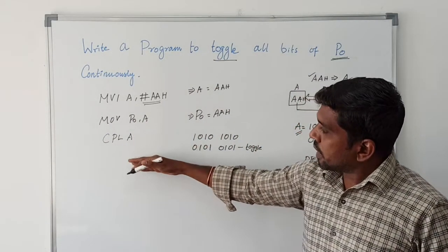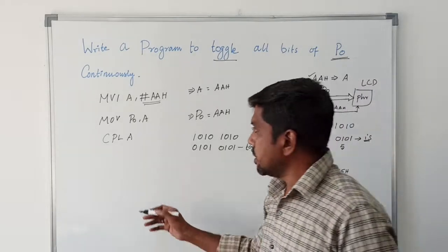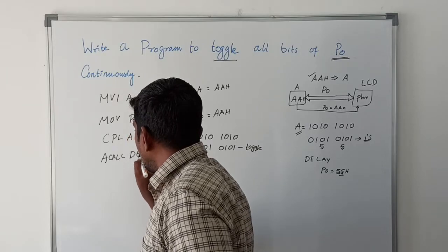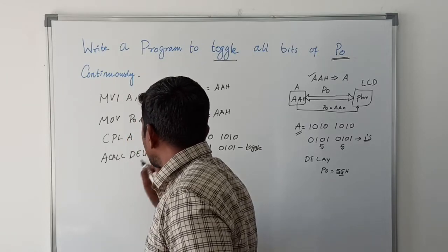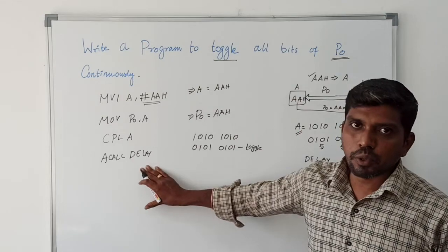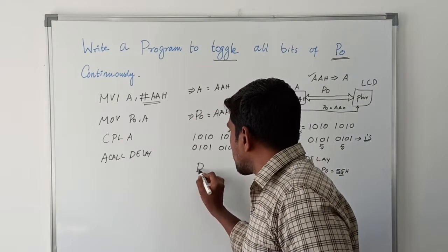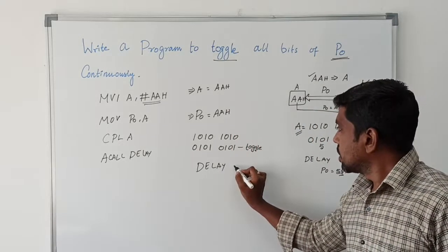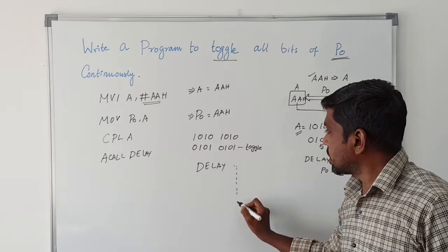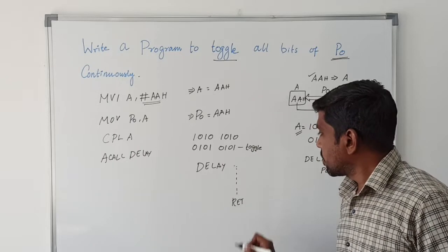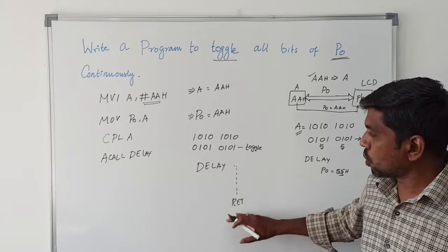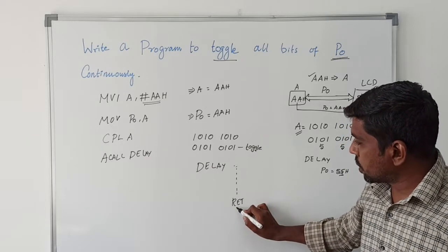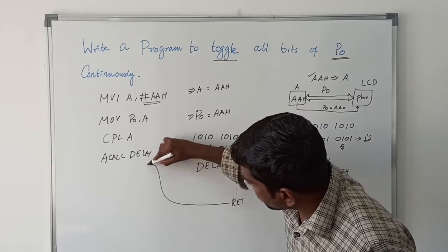Then I introduce some delay using the instruction ACALL delay. It is a type of subroutine call. The program counter is moved to the subprogram. I am using some instructions related to delay. Finally, I am using a return instruction. After completing the delay instructions, it returns to the main program.